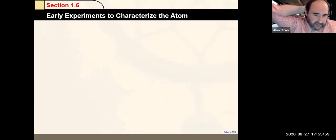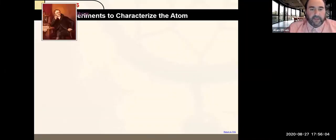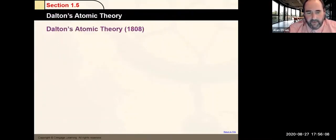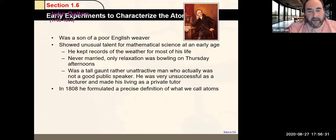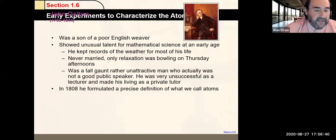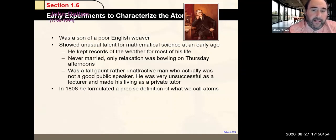A lot of our understanding of the atom started with John Dalton and Dalton's atomic theory. He had a very good talent for math and science. He would record the weather every day and he liked to go bowling on Thursdays. The important part about Dalton is he came up with a precise definition of what we refer to as atoms. His theory is not necessarily correct in all aspects, but there are very important parts that are correct.